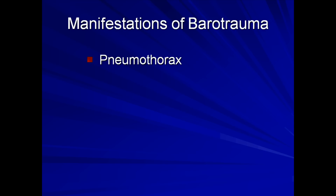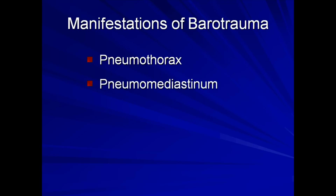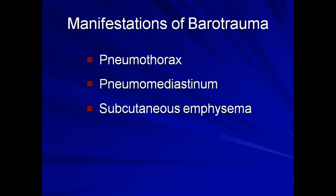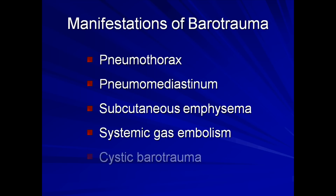Other less common manifestations of barotrauma include pneumomediastinum and subcutaneous emphysema, both of which I will show images of in a moment. One can also get a systemic gas embolism when the intra-alveolar pressure exceeds pulmonary venous pressure. And finally, one can develop cystic lesions in the lung parenchyma as a relatively contained form of barotrauma.